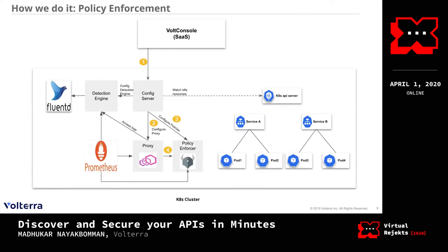Now, talking about policy enforcement: we create a liaison policy in our SaaS and it gets configured onto the config server at the node level. The key new component here compared to the discovery diagram is the policy enforcer. When the config server distributes policies and a new flow comes from service A to service B, the proxy asks the policy enforcer to authorize that flow. The policy enforcer looks up the policies and, depending on the attributes, either allows or denies the flow. The proxy ensures enforcement at the data path level, and whenever a policy is matched, a metric is incremented and scraped by Prometheus, which then gets sent to the SaaS.